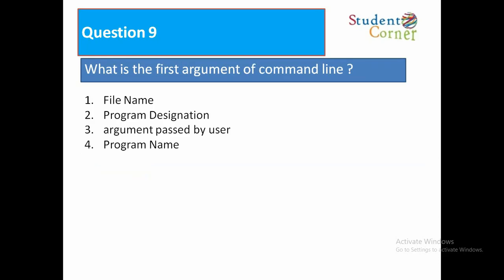Question number 9. What is the first argument of command line? Option 1 file name, option 2 program designation, option 3 argument passed by user, option 4 program name. Option 1 file name is the right answer.